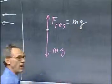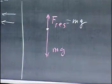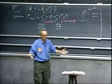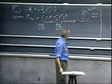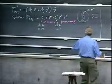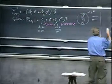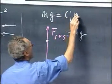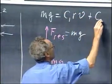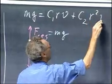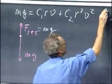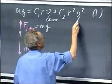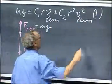And when the two are equal, then there is no longer acceleration, so the object has a constant speed. And we call that the terminal velocity. And that will be the case when mg equals c1 r v plus c2 r squared v squared. And then we have here terminal velocity.